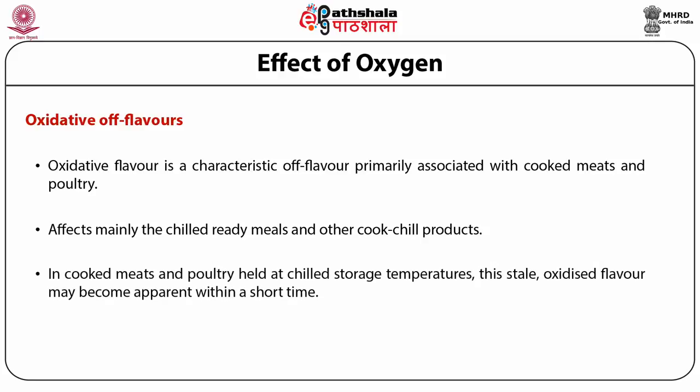In cooked meat and poultry held at chilled storage temperatures, this stale oxidized flavor may become apparent within a short time. Meat, fish, poultry, beverages, and dairy products are highly susceptible to oxidative processes which can initiate a chain of reactions resulting in flavor impairment. MAP under low oxygen levels can delay the onset of oxidative off-flavors.